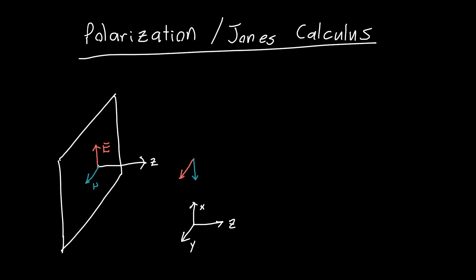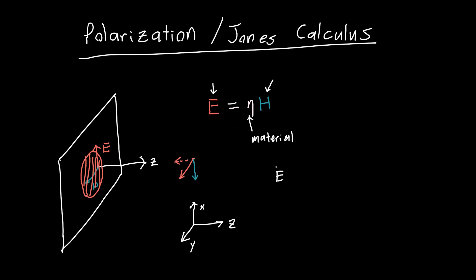The electric field could be pointing somewhere in between — anywhere in the x-y plane — and then the H field is just 90 degrees away from that. One of the many beautiful things about plane waves is that the electric field and the magnetic field are just related by a constant eta, the wave impedance of free space. This only depends on the material we're propagating through, so if we know what the E field is, we automatically know what the H field is. Since E cross H points in the direction of propagation, knowing one field fully determines the other, so we're only going to worry about the electric field.